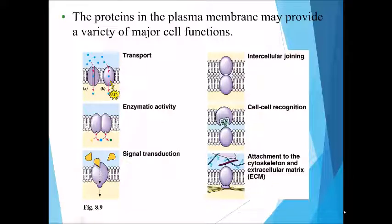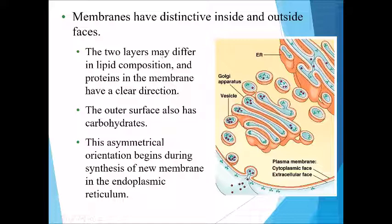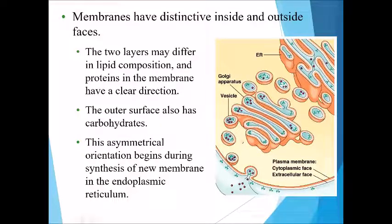The membrane has a distinctive inside and outside face. The two layers may differ in their lipid compositions, and the proteins in the membrane have clear directionality. The outer surface also has carbohydrates, and this asymmetrical orientation begins during synthesis of new membrane in the endoplasmic reticulum.